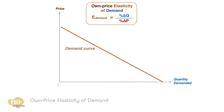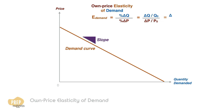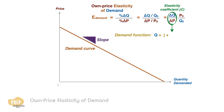It's important to understand that elasticity is not equal to the slope of a demand curve. This is because elasticity is based on percentage changes, while the graph is based on absolute values. If we decompose the formula, we get it in this form. This term — the ratio of change in price to change in quantity — is known as the elasticity coefficient and is also the slope of the demand function.